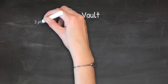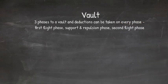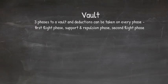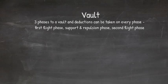Starting with vault: there are three phases to a vault that many people don't know about. The first flight phase is when the gymnast is between the springboard and the vault table. The support and repulsion phase is when she is actually on the vault table. The second flight phase is as she comes off into her landing. Deductions can be taken in each phase, so if a gymnast has bent legs, she gets a deduction for bent legs taken in all three phases — which is how scores can drop quickly even on what looks like a decent vault.